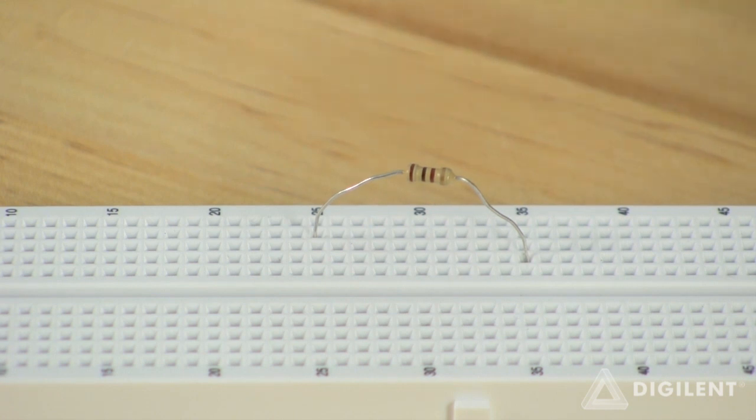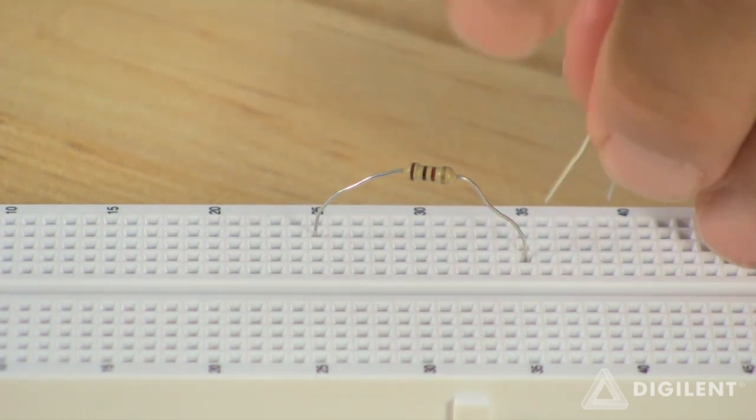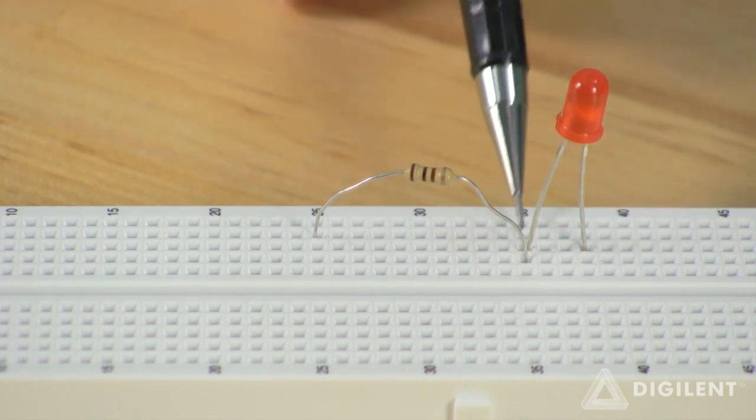We'll connect the LED's anode to the resistor. Remember that the anode is the longer of the diode's terminals. By plugging the anode into a hole in the breadboard that's in the same row as one of the terminals of the resistor.